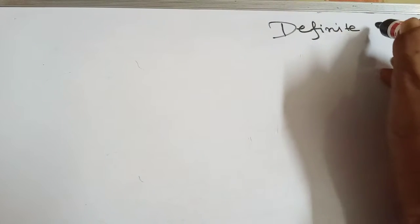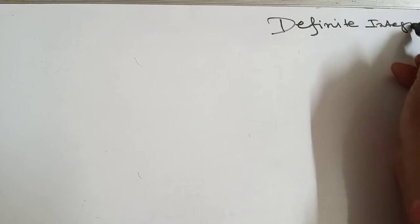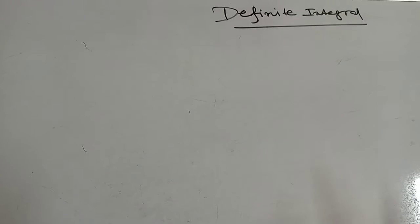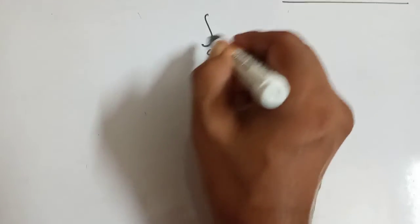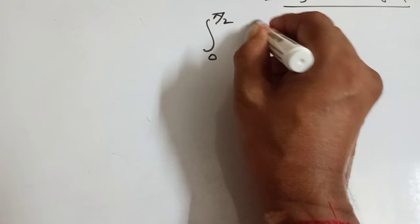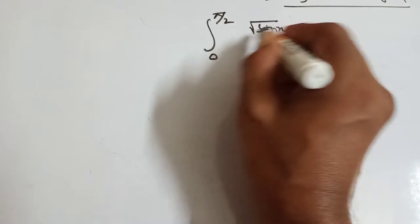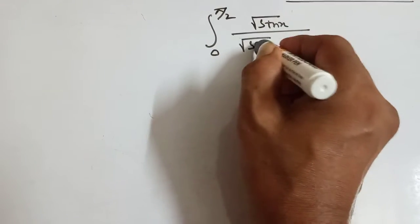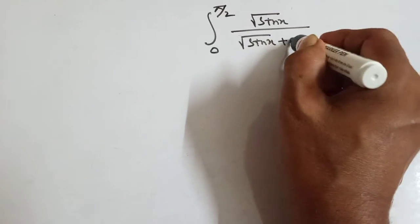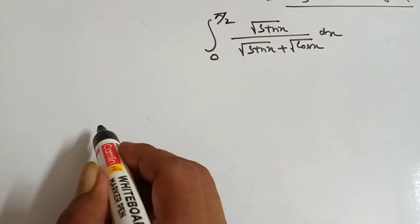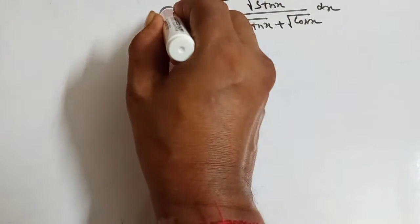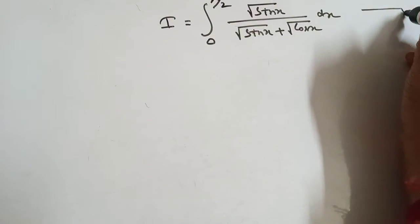This is the properties of Definite Integration. We have the integral from 0 to π/2 of √sinx divided by √sinx plus √cosx. Let this be i — the first equation.